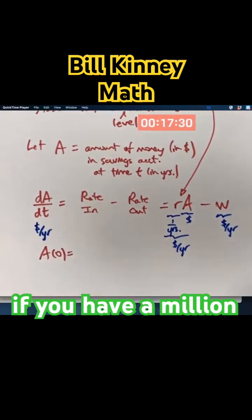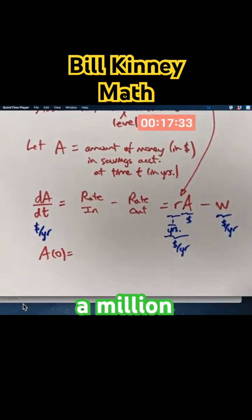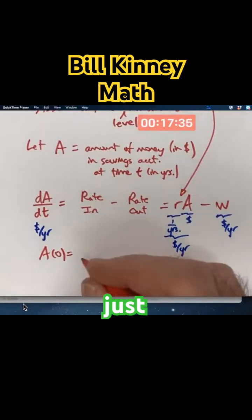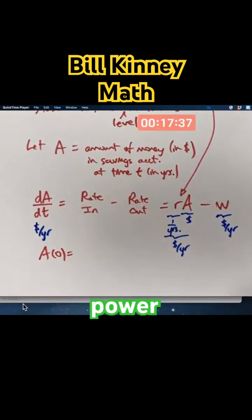Well, if you have a million dollars, it would be A of zero is a million. But just to give ourselves a little bit more problem-solving power, let's not specify what it is other than calling it A-naught.